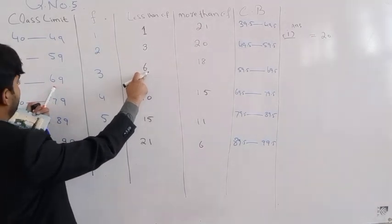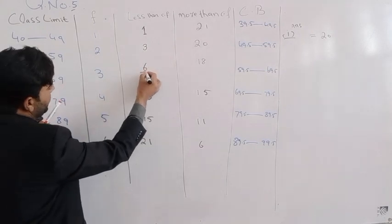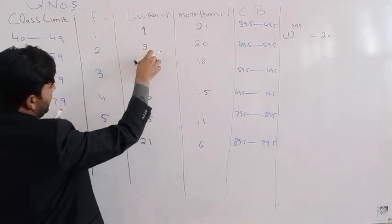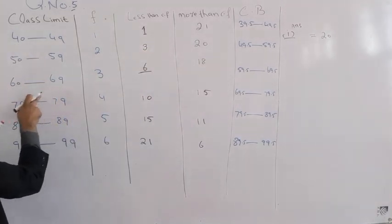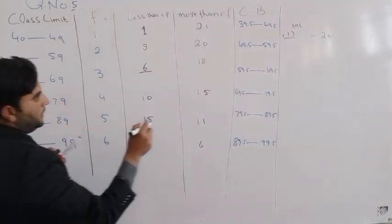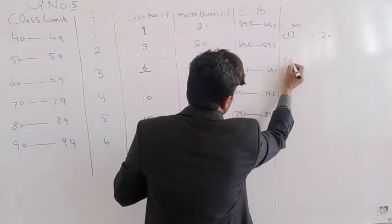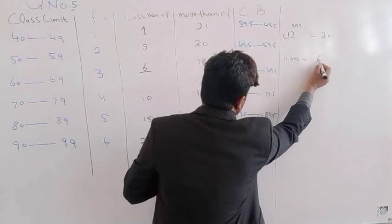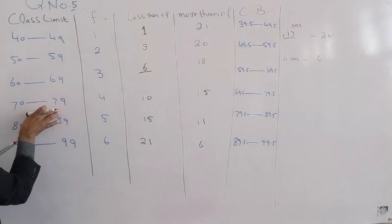The answer is 6 students. Six students got less than 70 marks. Students who got between 40 and 79 marks - the answer for part 2 is 6 students who got less than 70 marks.